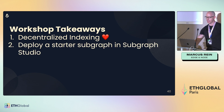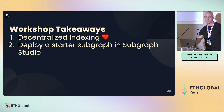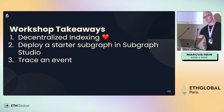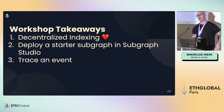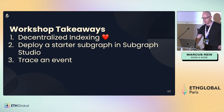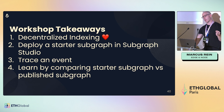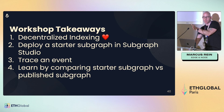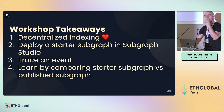Workshop takeaways: decentralized indexing is great. Deploy a starter subgraph in Subgraph Studio — just deploying a starter subgraph and querying it in your hackathon project is enough to get some prize money, so you don't have to do anything crazy. You can trace an event — start from the schema all the way down to the blockchain, or from the blockchain all the way to the schema. Play with a starter subgraph looking at a smart contract, then look at a more advanced one to compare.